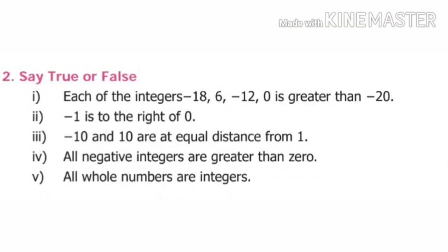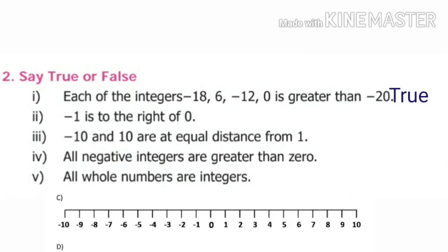Second one, say true or false. First, each of the integers minus 18, 6, minus 12, 0 is greater than minus 20. All these numbers are to the right of minus 20 on the number line, so the answer is true. Second, minus 1 is to the right of 0. This is false.